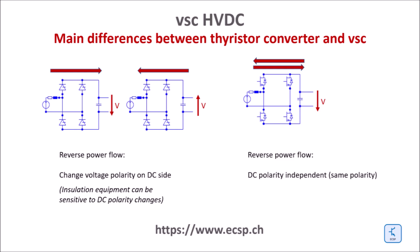Second, the thyristor converter works as a current source; current always has to flow in the same direction. To change the direction of power flow, the polarity of the transmission line on the DC side has to be changed. Some high voltage equipment may be sensitive to these DC polarity changes. VSCs, on the other hand, control the direction of the current on the DC side, so the power flow direction can be controlled without changing the polarity on the DC side.